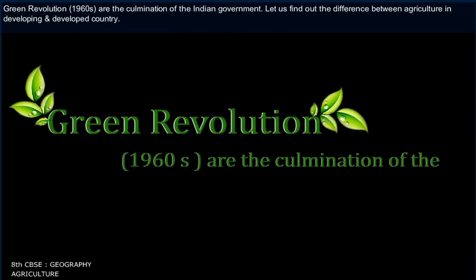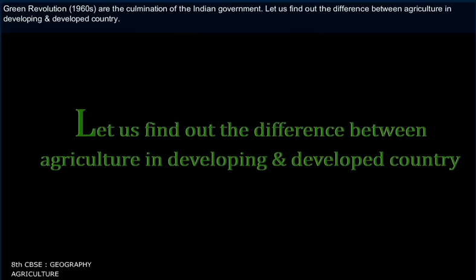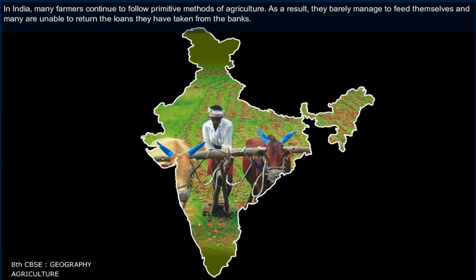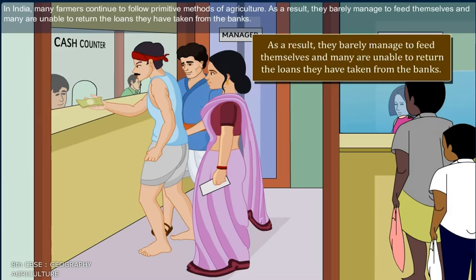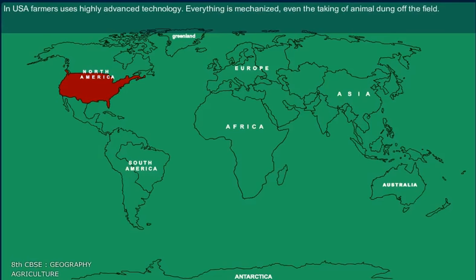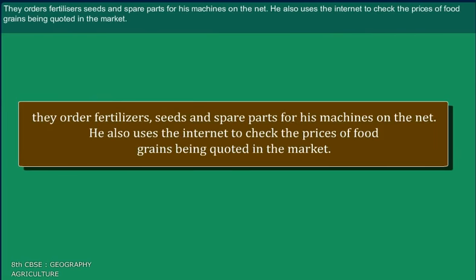The Green Revolution of the 1960s was a major initiative of the Indian government. Let us find out the difference between agriculture in developing and developed countries. In India, many farmers continue to follow primitive methods of agriculture. As a result, they barely manage to feed themselves and many are unable to return the loans they have taken from banks. In the USA, farmers use highly advanced technology. Everything is mechanized, even the removal of animal dung from the field. Farmers order fertilizers, seeds, and spare parts for machines online, and also use the internet to check prices of food grains in the market.